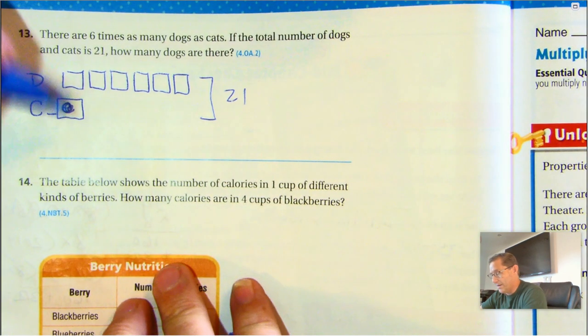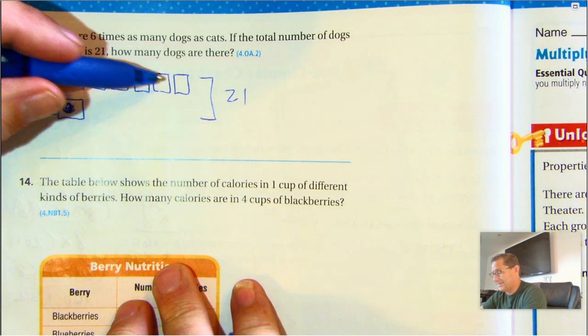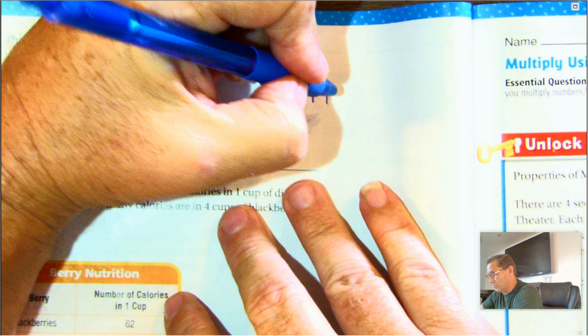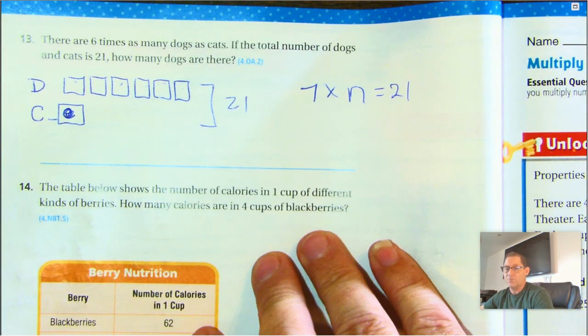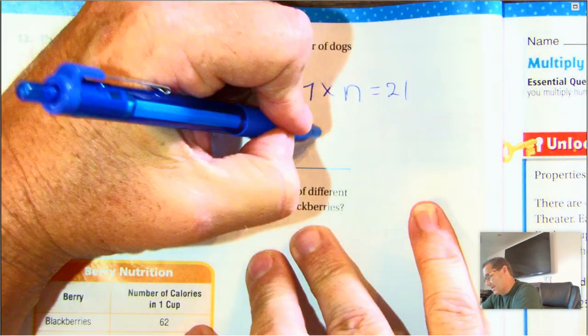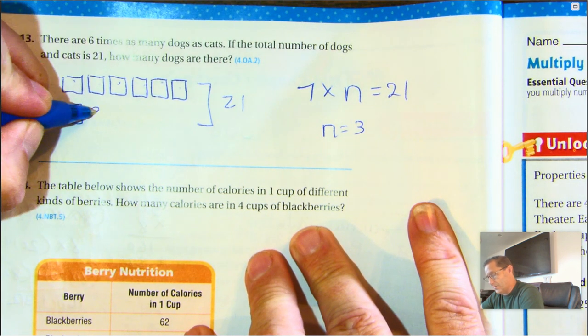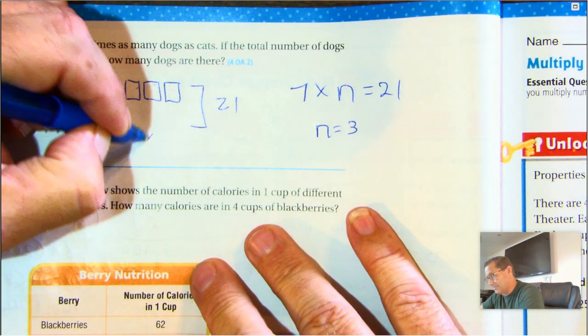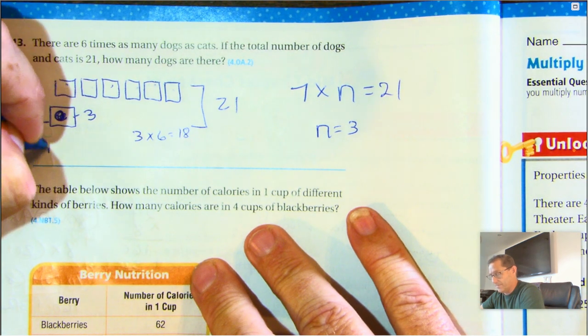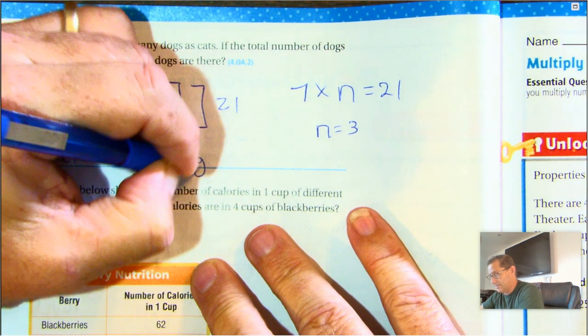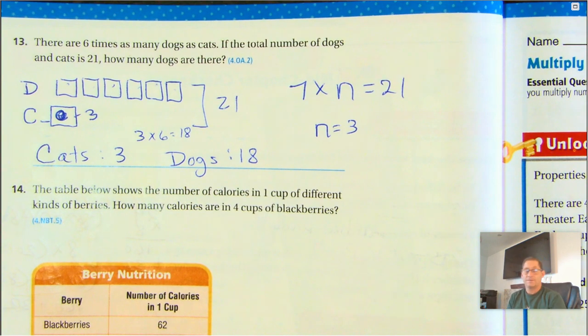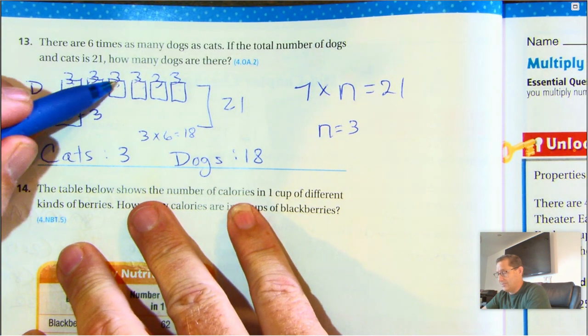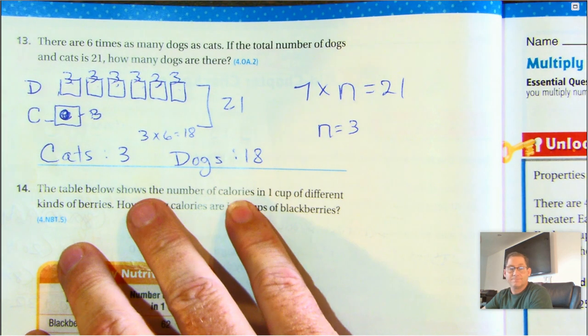And then we know that the dogs is 6 times as many as the cats. And together they equal 21. So how many parts do we have in this problem? We have 1, 2, 3, 4, 5, 6, 7. So we have 7 times some number, whatever the cats are, equals 21. So 7 times what is 21? 3. So we're saying that there were 3 cats and there were 6 times as many dogs. 3 times 6 equals 18. So cats, 3, dogs, 18. Okay. Does that make sense? Let's check if we put 3 in every box. 3, 6, 9, 12, 15, 18, 19, 20, 21. Okay. So that adds up right.